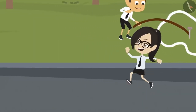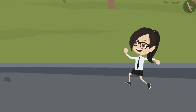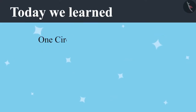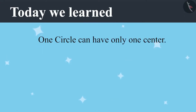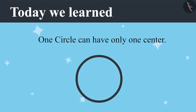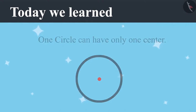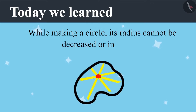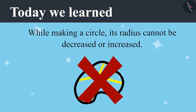Vandana is happy today because she helped Ayushman and Riyansh. She told Ayushman that a circle can have only one centre, and told Riyansh that while making a circle its radius cannot be decreased or increased. If you pay attention in class, you will not have to repeat your work like Riyansh and Ayushman.